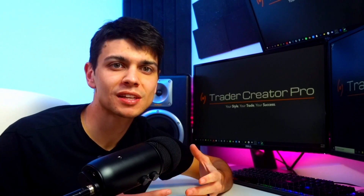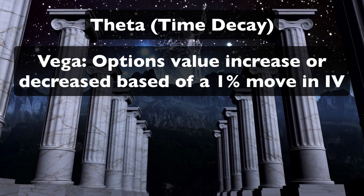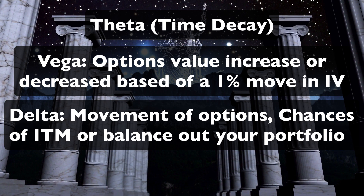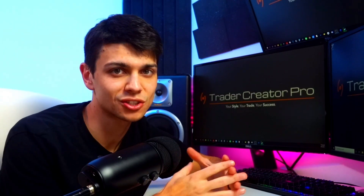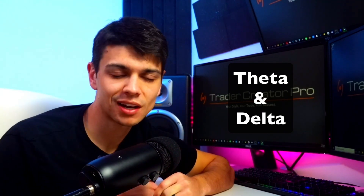Gamma and Delta are commonly used for portfolios as a whole, especially with hedges. So those are the four most popular Greeks: Theta, also known as time decay; Vega, which tells you how much the contract will increase or decrease based on a 1% movement in IV; Delta, which helps you understand the movement of options, whether your portfolio is bullish or bearish, and the chances of the contract ending in the money; and Gamma, which tells you at what rate the Delta will be moving. I traded options for three years before completely understanding these Greeks — Theta and Delta are the key Greeks you should know.